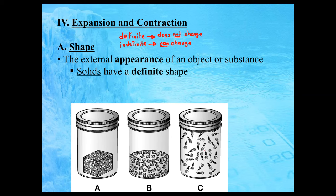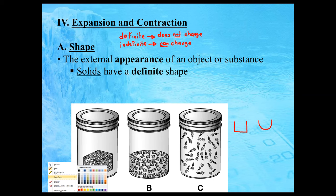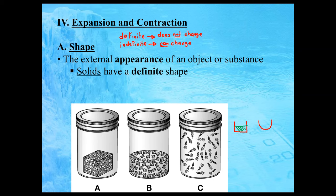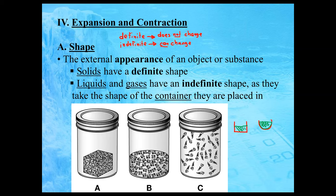What about liquids and gases? If we had two containers — one with a flat bottom and one with a rounded bowl-like bottom — and we took some liquid and poured it from the flat-bottomed container into the bowl-shaped one, the actual shape of the liquid would change. The reason it changes is because the liquid takes the shape of the container. So if the shape is changing, we say it is indefinite. Gases do the same thing — they also take the shape of their container. Therefore, liquids and gases have an indefinite shape.